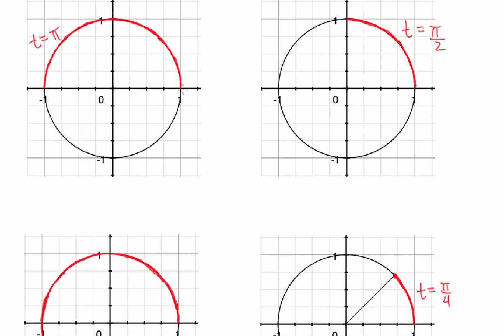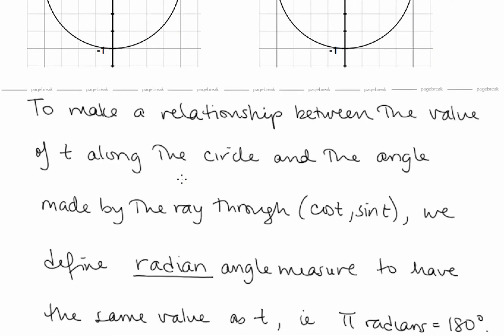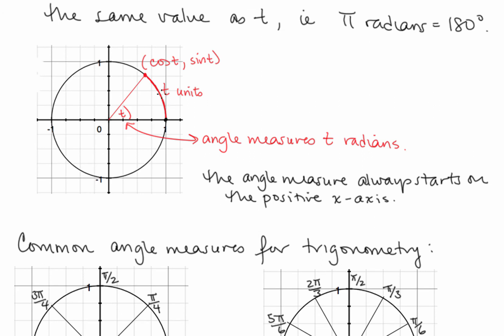We know that traveling t equals π around the circle is traveling 180 degrees in angle measurement. Now we're defining radian measure so that in radians, this angle is the same as this distance around the circle. So here we have t equals π radians. In general, if we're traveling t units along the circle, our angle measures t radians. The point along the circle is (cos t, sin t), and this angle measure always starts on the positive x-axis.